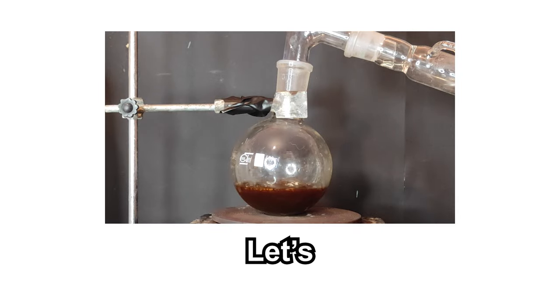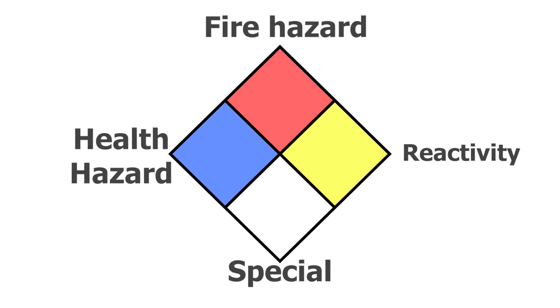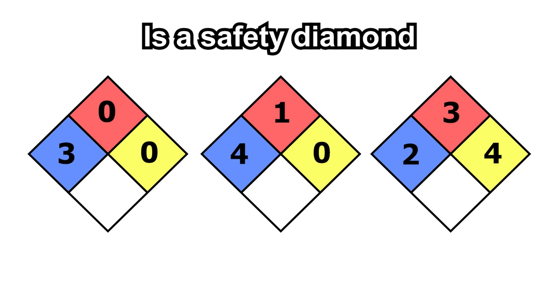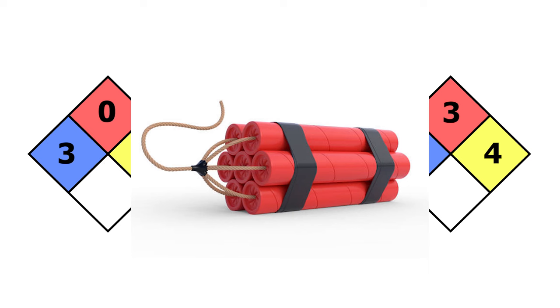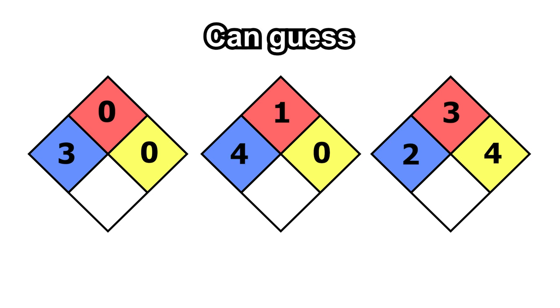Also, why is distilling less play game? This is a safety diamond, and here's what every number means. One of these is a safety diamond of sodium cyanide, another one is of nicotine, and the last is of nitroglycerin. Let's see if you guys can guess which one it is.